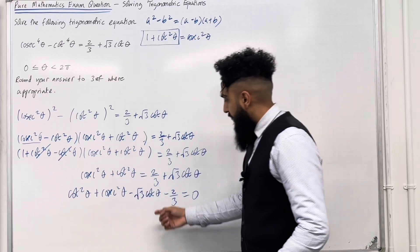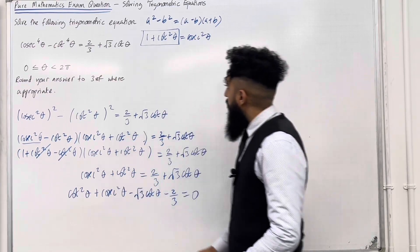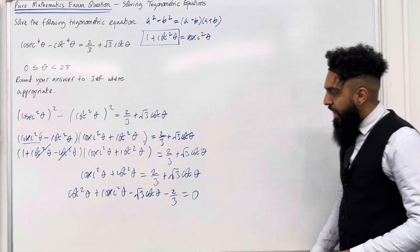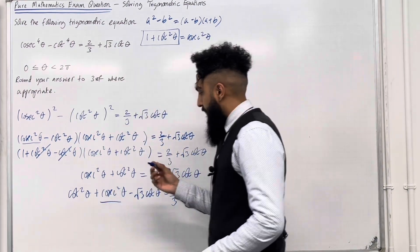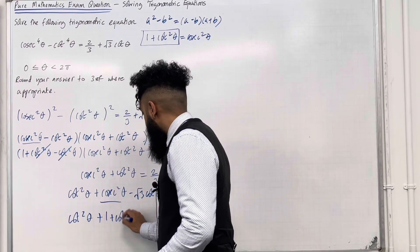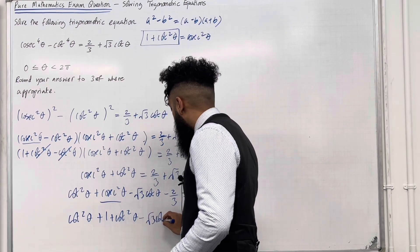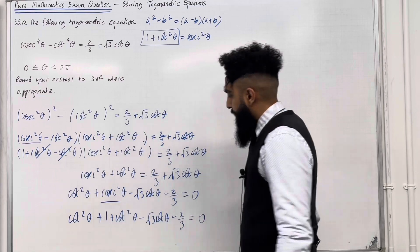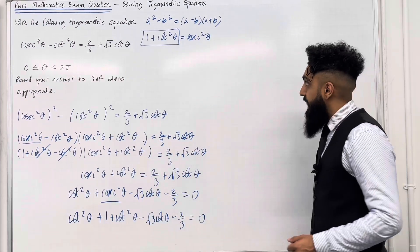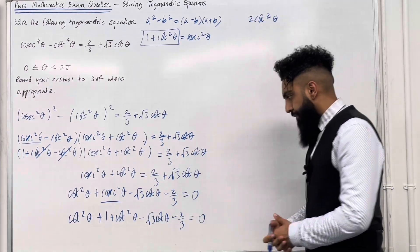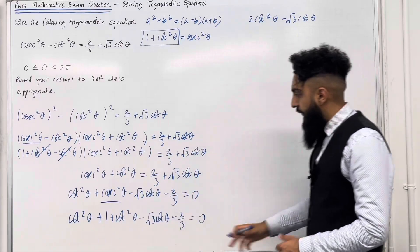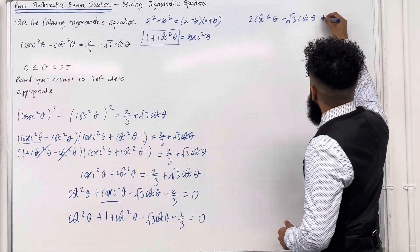We have a cot squared, a cosec squared, a cot, and a constant. I need to replace cosec squared theta with 1 plus cot squared theta so the entire equation has one trig ratio. Substituting gives: cot squared theta plus cot squared theta plus 1 minus square root 3 cot theta minus 2 over 3 equals 0. Simplifying: 2 cot squared theta minus square root 3 cot theta plus 1 over 3 equals 0.